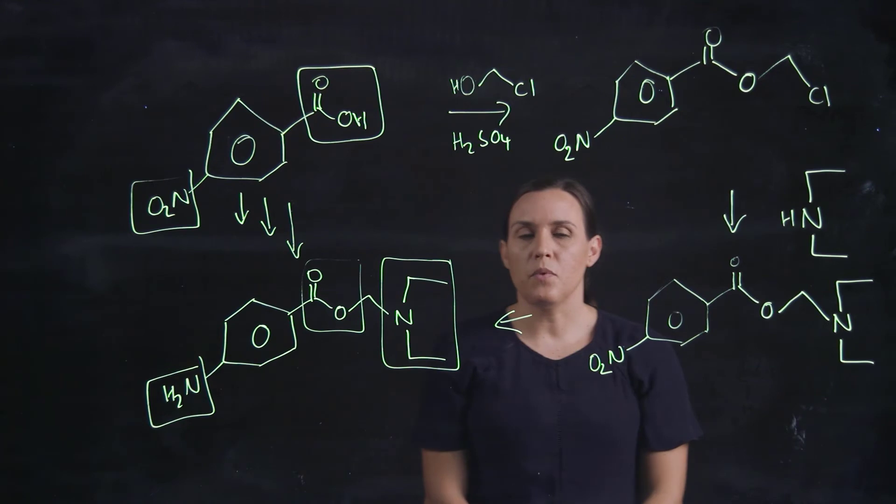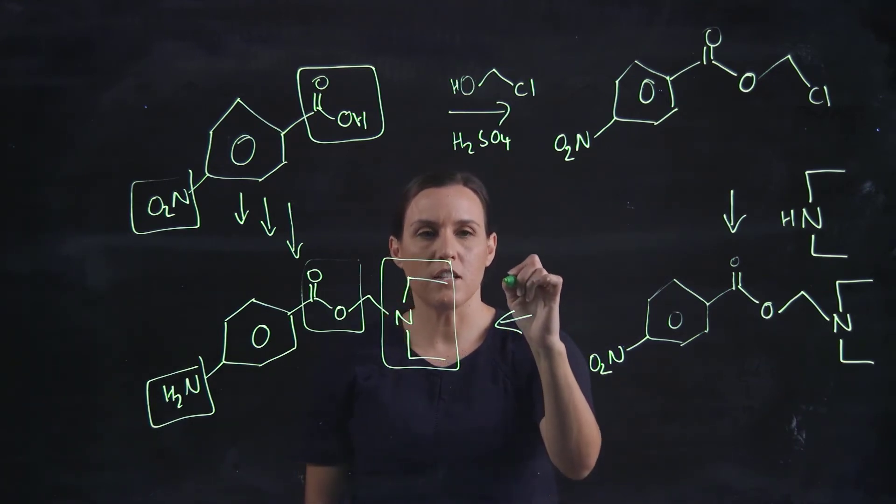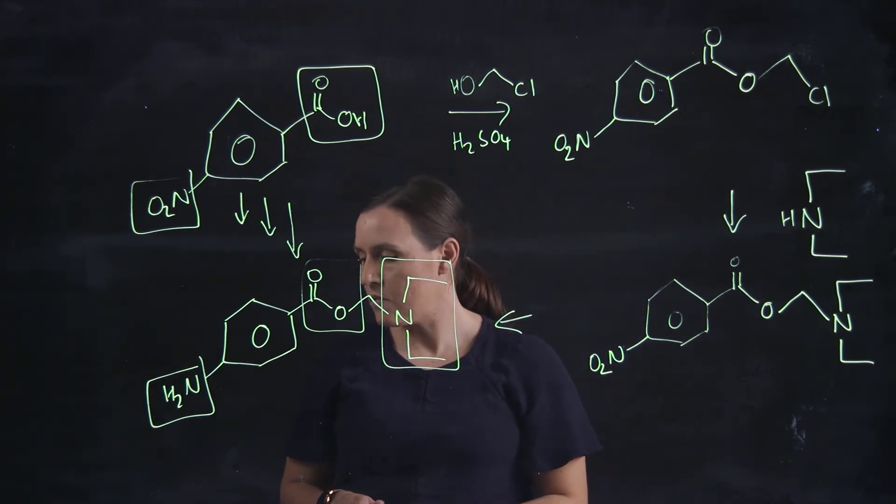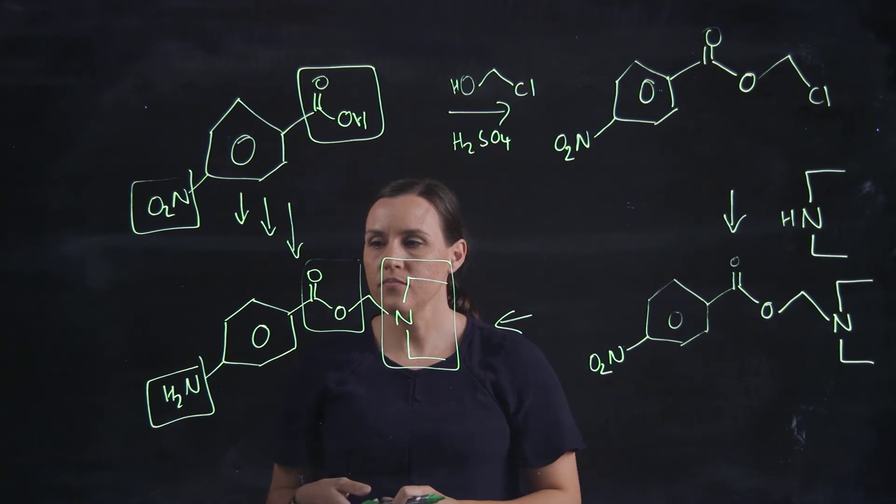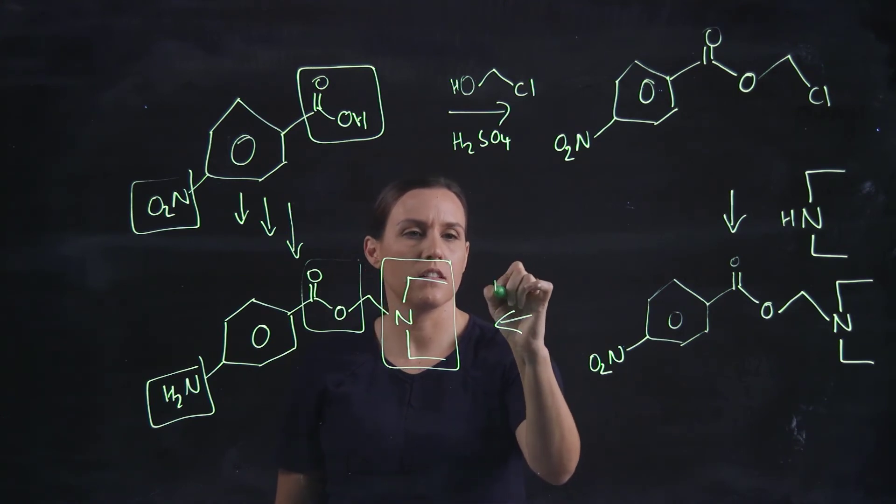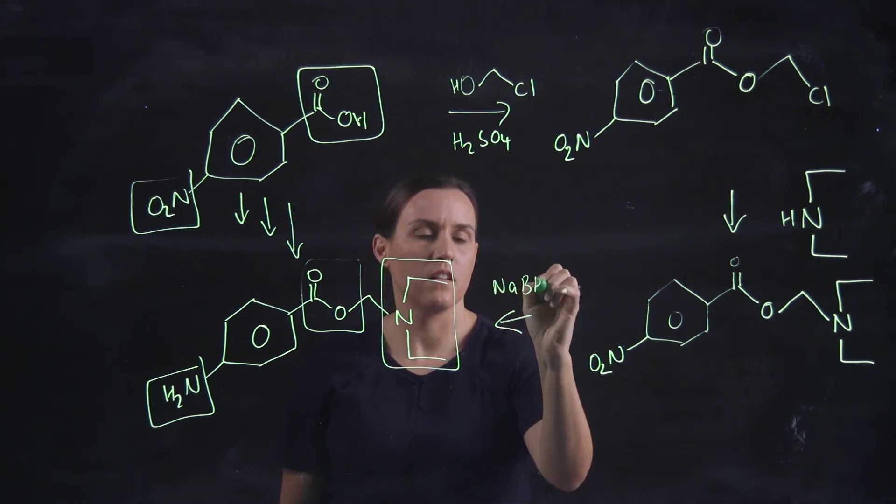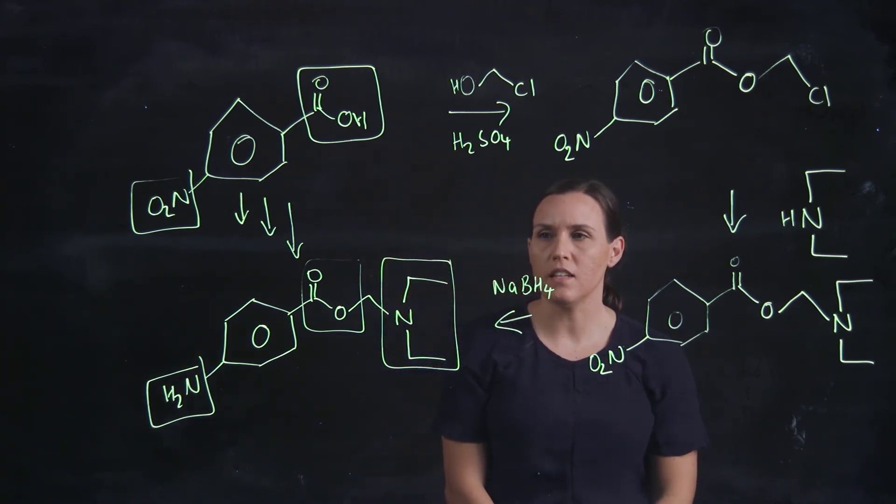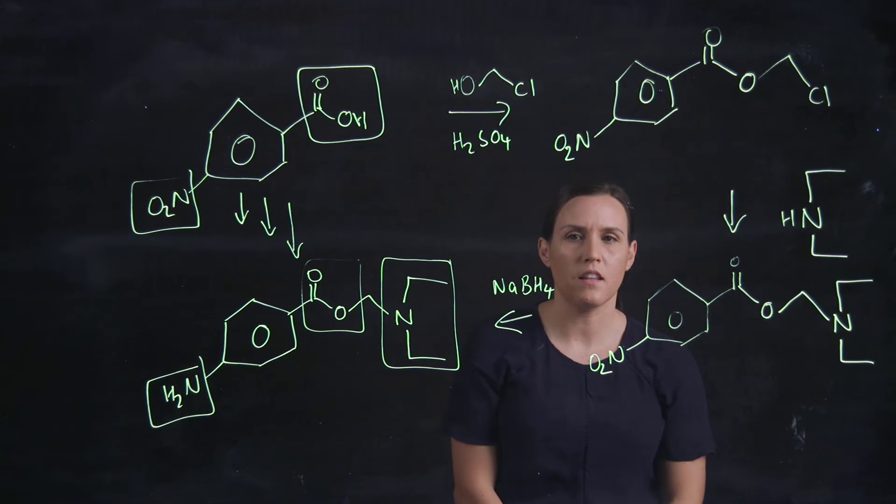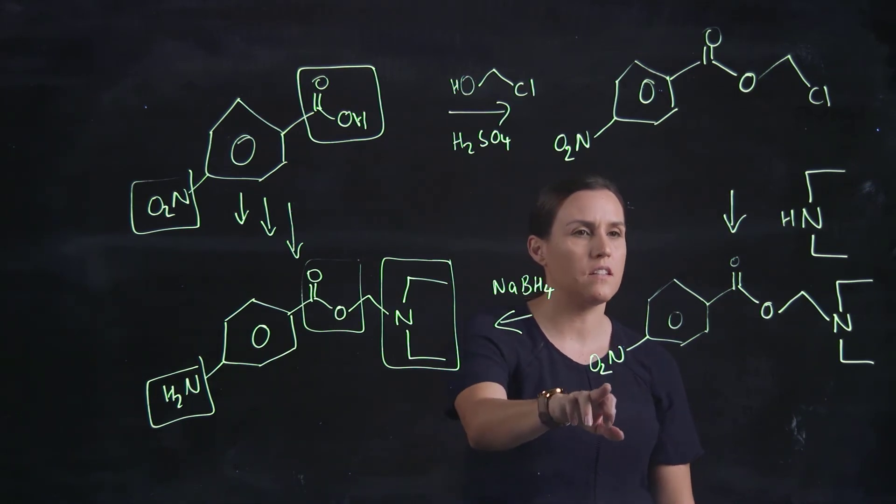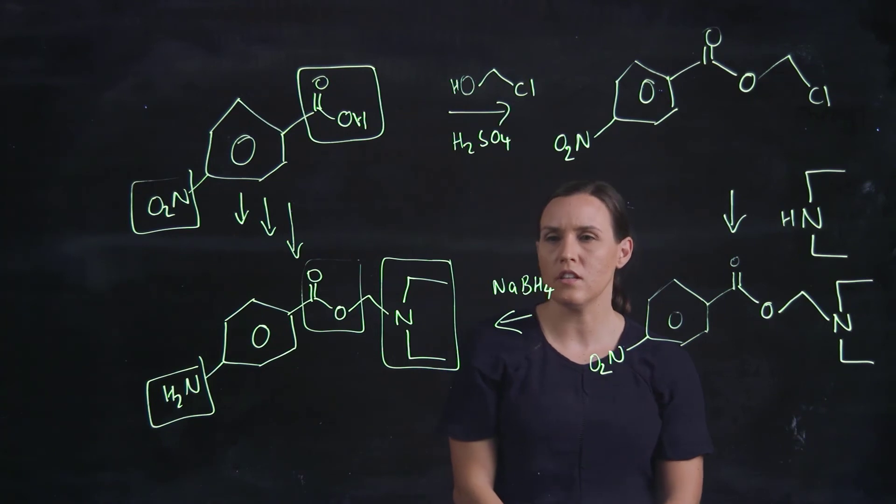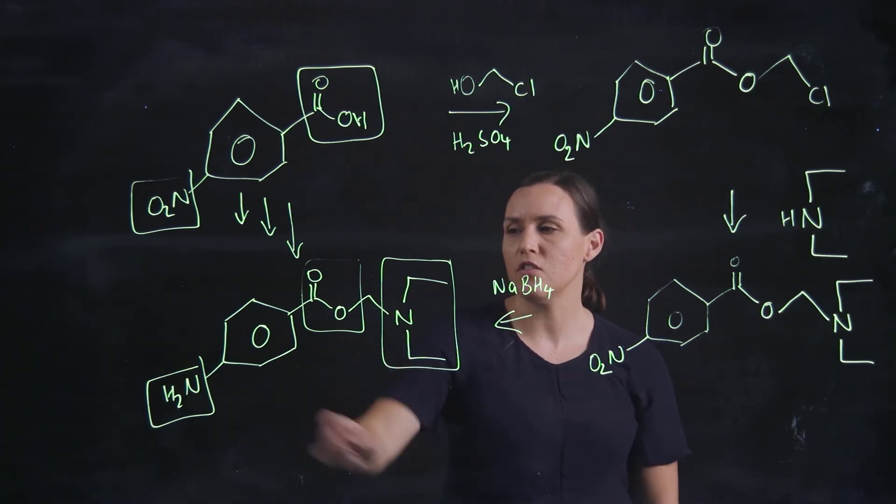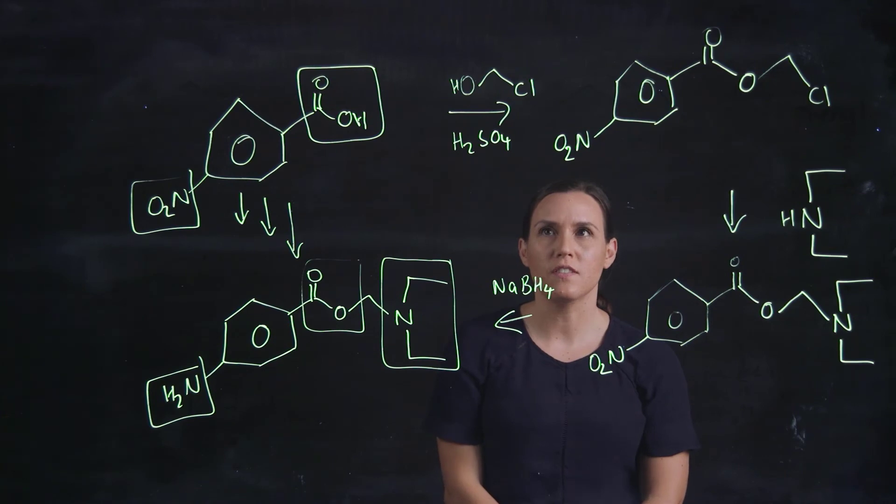So the last step there would be the hydrogenation conditions. Now, sodium borohydride would probably be a good one there so we don't reduce down anything else. So that will selectively target that carbonyls that are on the nitrogen and reduce those down to your NH2s.